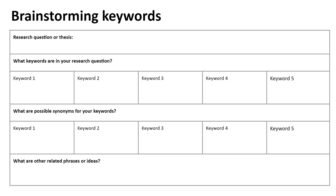So why brainstorm? A brainstorm can help keep you organized. And importantly, searching for information requires experimentation and flexibility. To find what you're looking for, you're probably going to need to try out different keywords, different combinations of keywords, and so forth. If you brainstorm ahead of time, you already have that list on hand of potential keywords to experiment with in the library database.